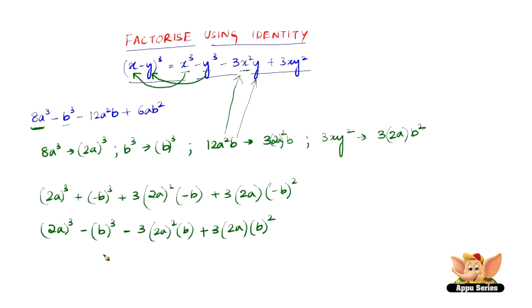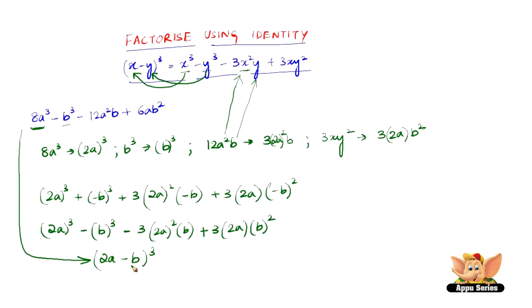Therefore, this can be factorized as 2a minus b, the whole cube. So, 2a minus b the whole cube is the factorized form of 8a cube minus b cube minus 12a squared b plus 6ab squared.